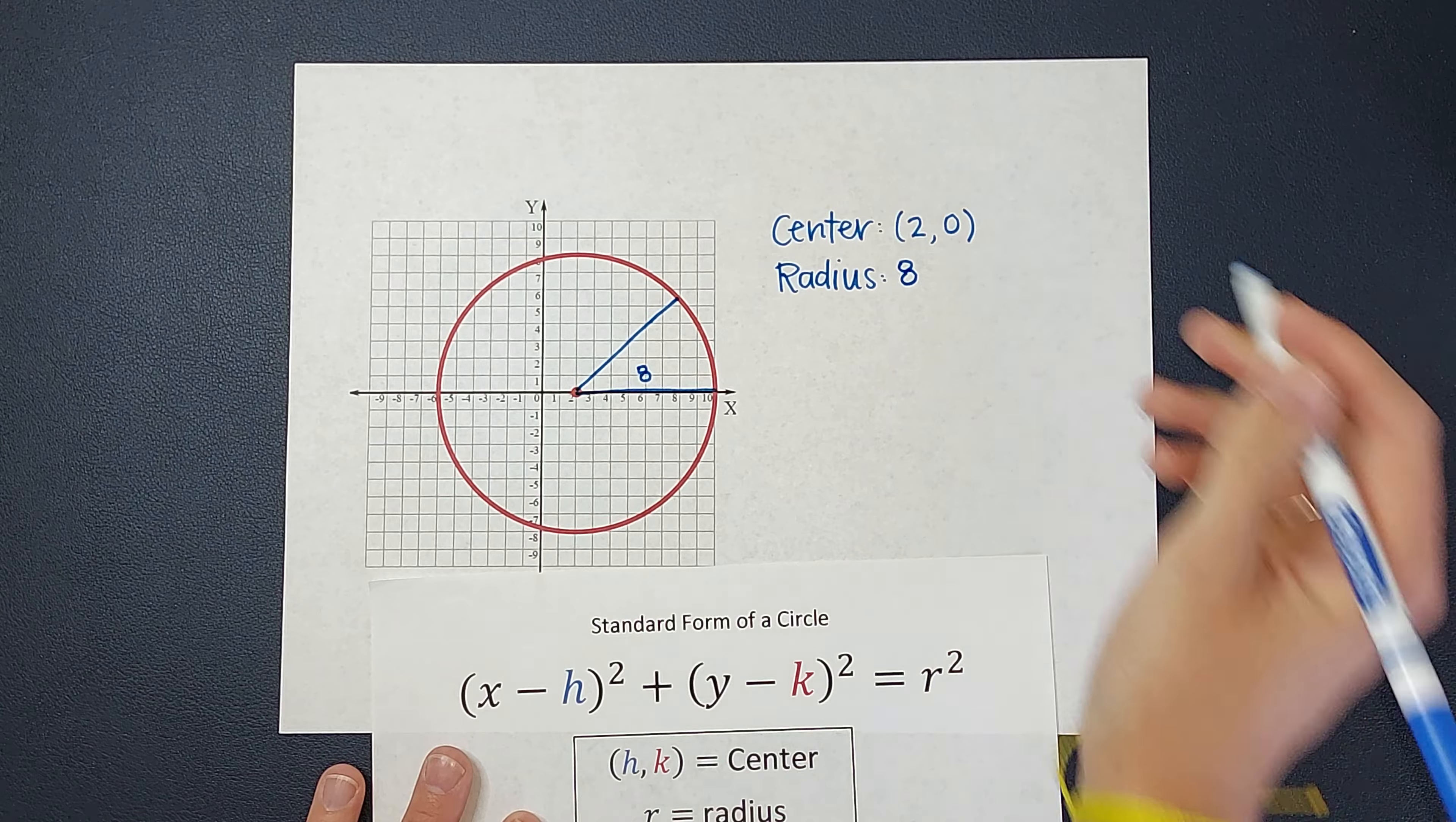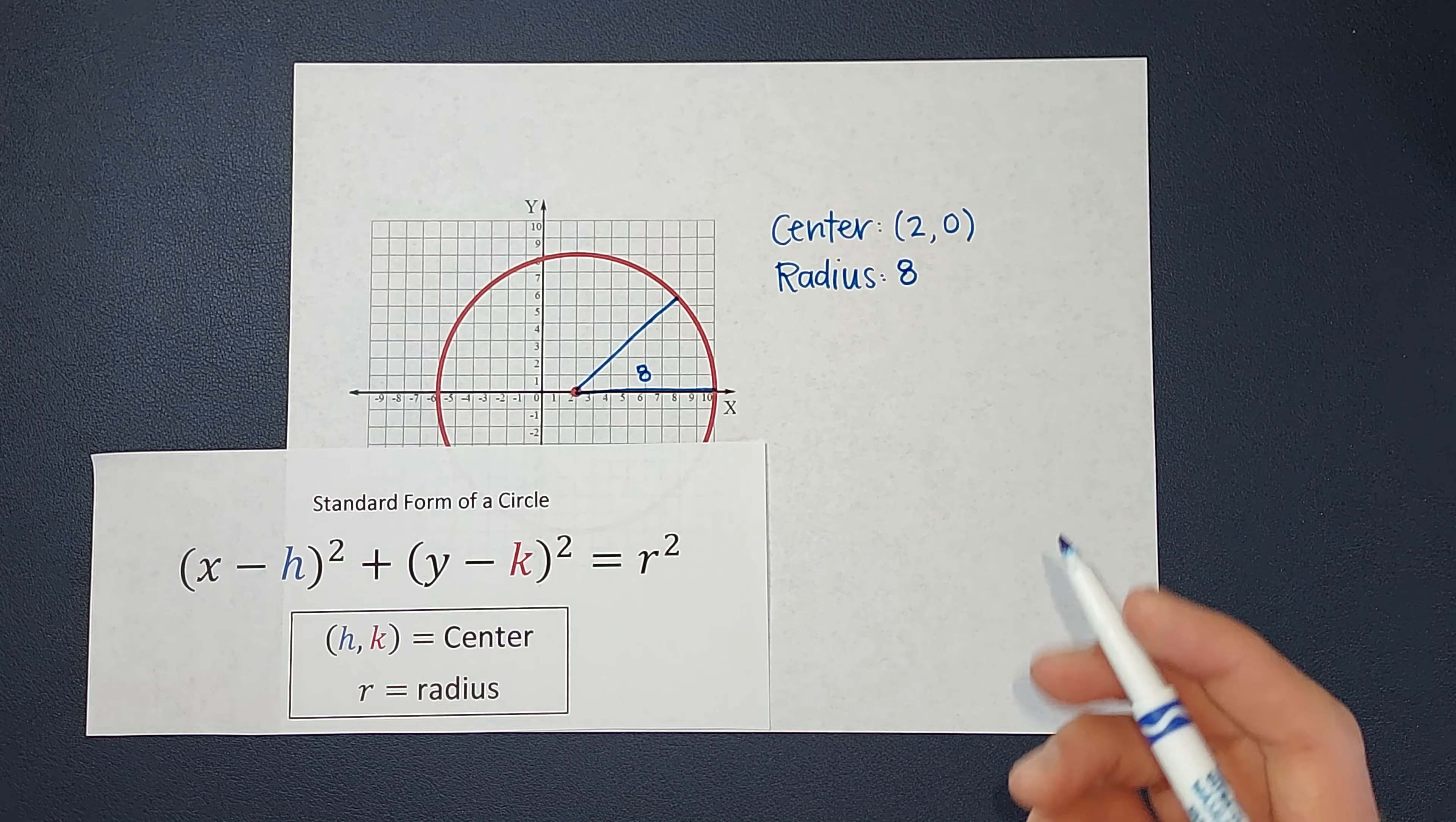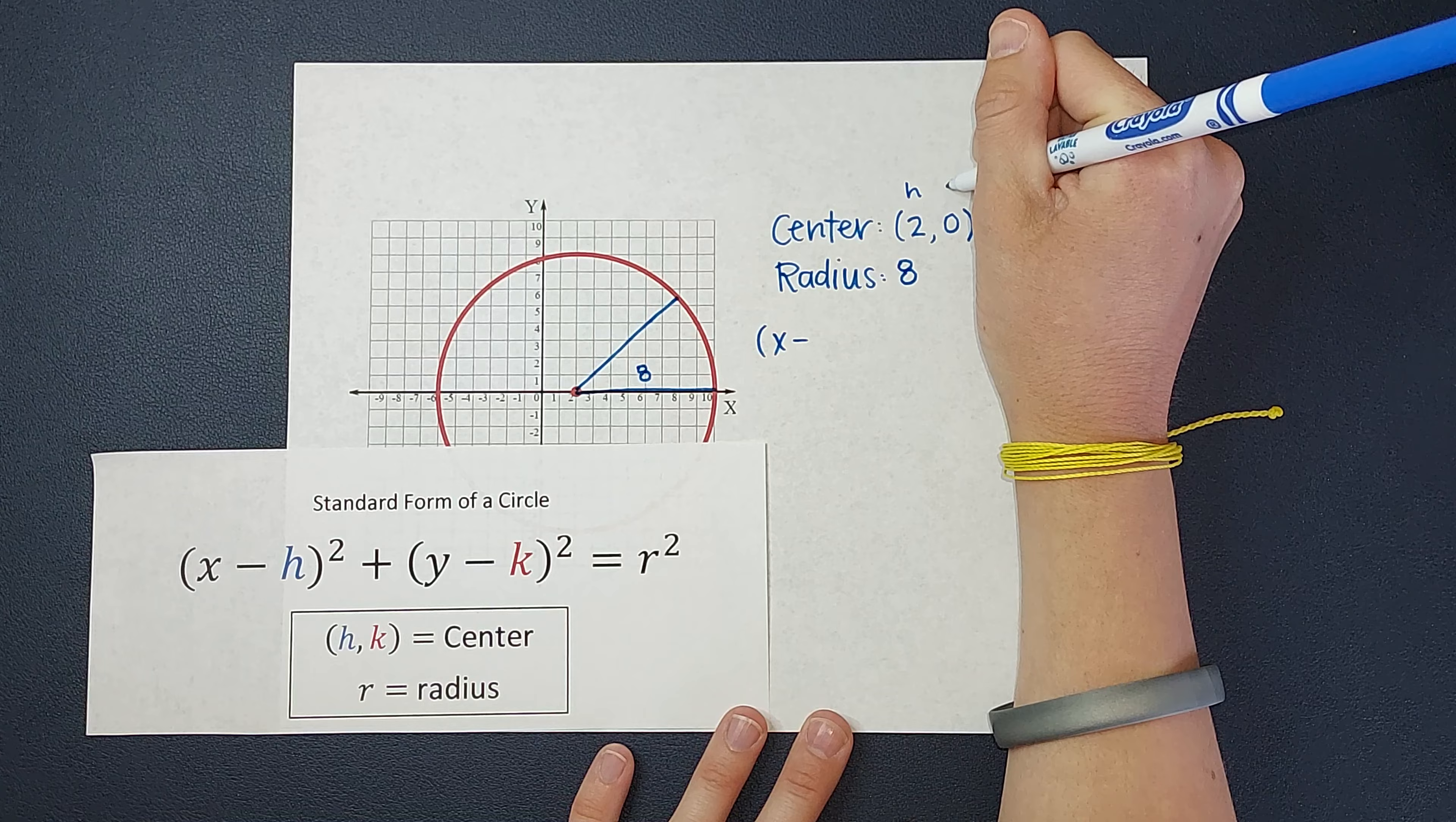All right, I have all the information I need to start filling this in. So I'm trying to make it so you can still see everything. There we go. So we are going to have x minus h. Now what is h? h is the first number of my center. So my center is h, k.